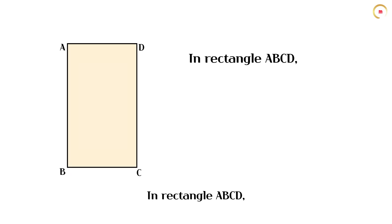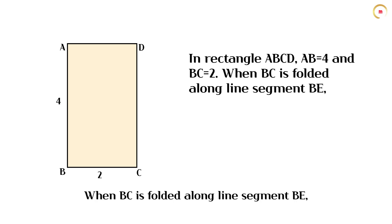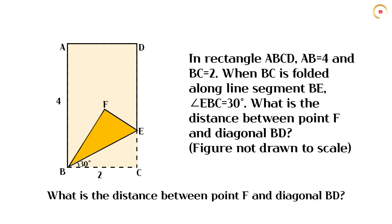In rectangle ABCD, the length of AB is 4 and the length of BC is 2. When BC is folded along line segment BE, angle EBC is 30 degrees. What is the distance between point F and diagonal BD?